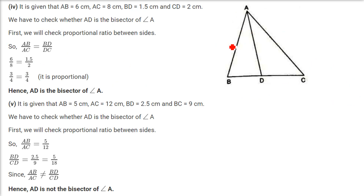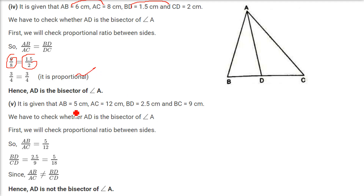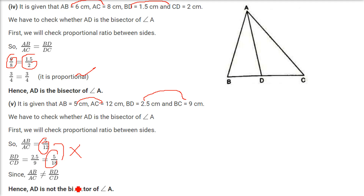Last case: 5 by 12 and 2.5 by 9 equals 5 by 18 — these are not equal, so AD is not the angle bisector of angle A.